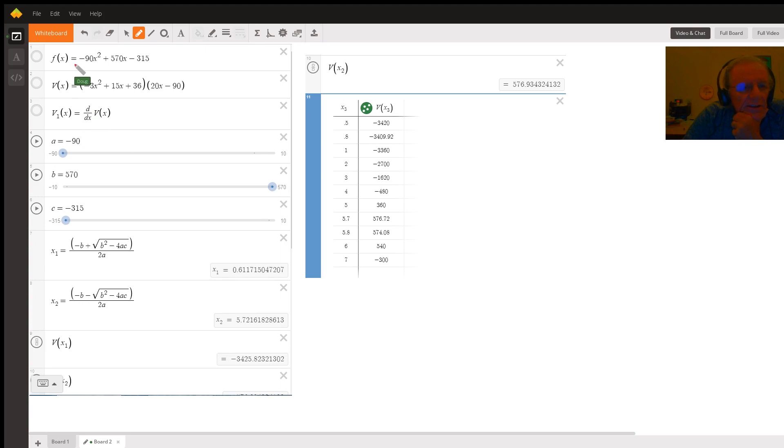I went ahead and solved this quadratic equation right here, which is the first derivative, the second simplification step, and use the quadratic formula to get the values of x sub 1 and x sub 2.